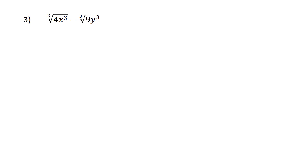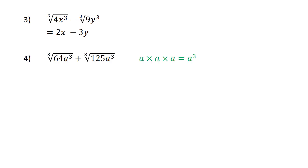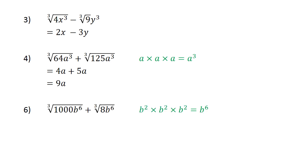The cube root of 4x to the power of 6. The cube root of 4x to the power of 3 minus the cube root of 9y to the power of 3 equals 2x minus 3y. The cube root of 4x to the power of 5. The cube root of 648 plus the cube root of 5a to the power of 5; the cube root of 648 plus the cube root of 125a to the power of 3. Remember: a times a times a equals a to the power of 3. 4a plus 5a equals 9a. 5a plus 3.